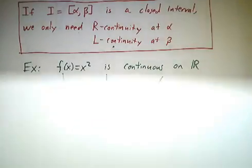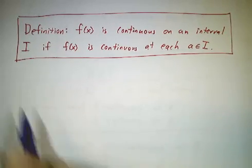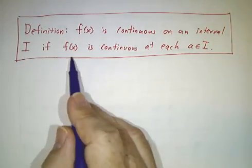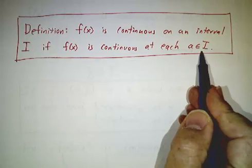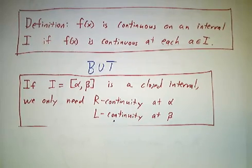So now we're ready for our definitions of intervals of continuity. A function is continuous on an interval I if it's continuous at each point in that interval, with up to two exceptions.